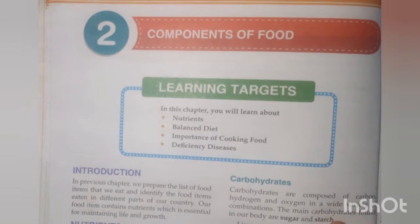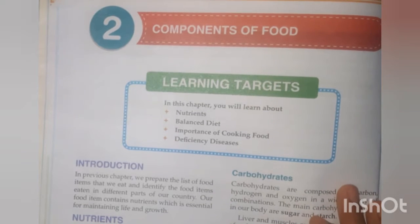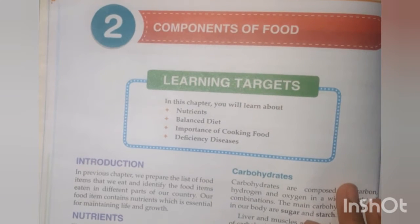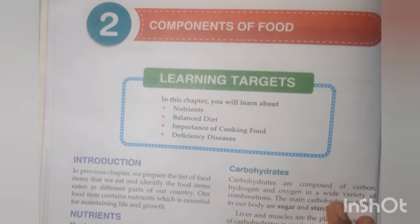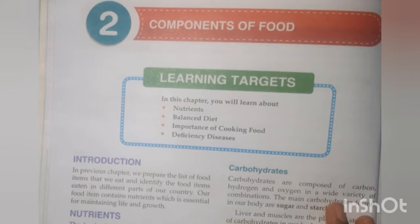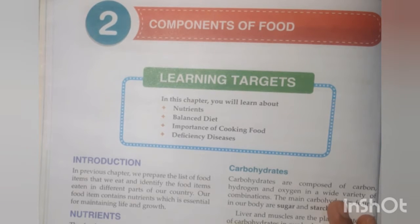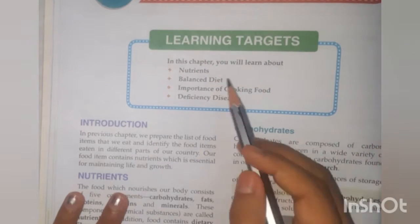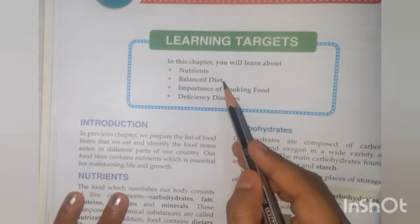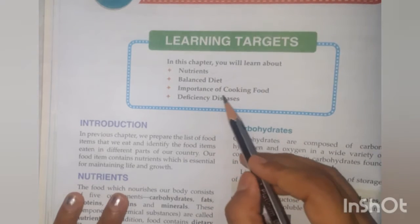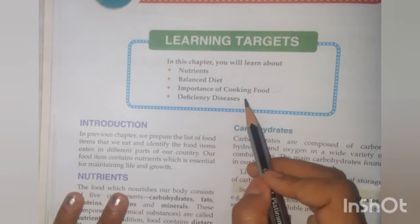In the last chapter we learned about food — where it comes from, the source of food, and how to use it. Today we are going to learn about the nutrients that make up food, what a balanced diet is, the importance of cooking food, and deficiency diseases.